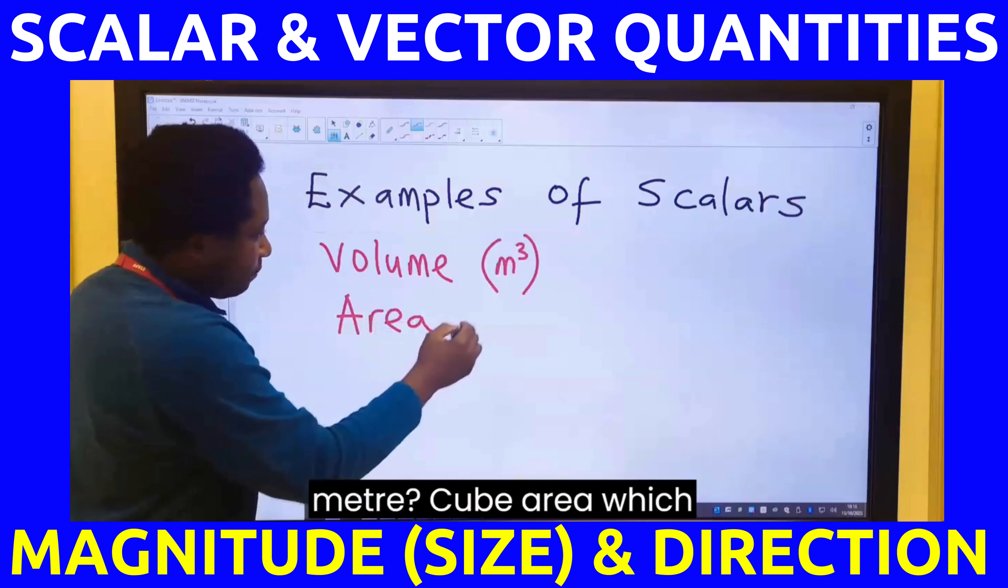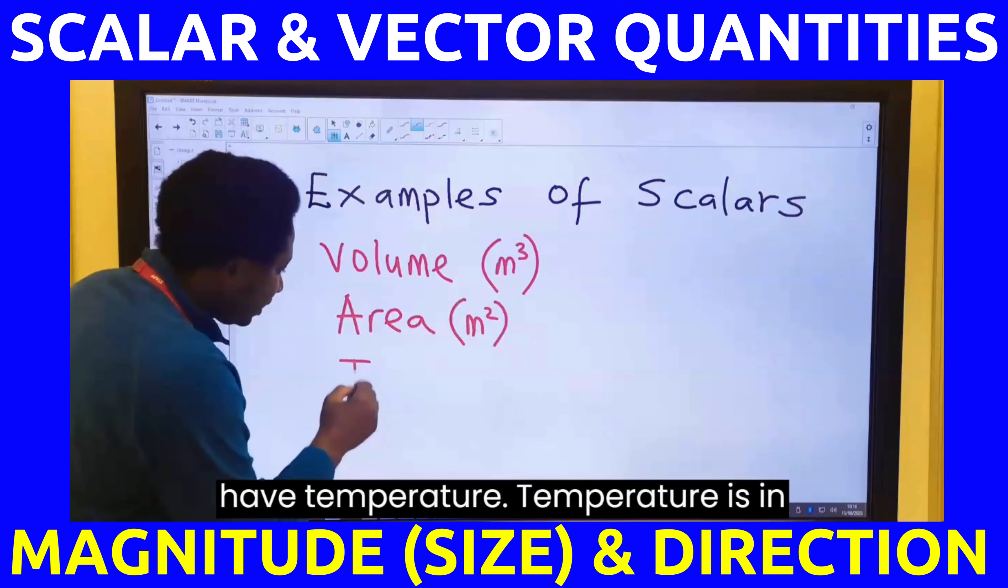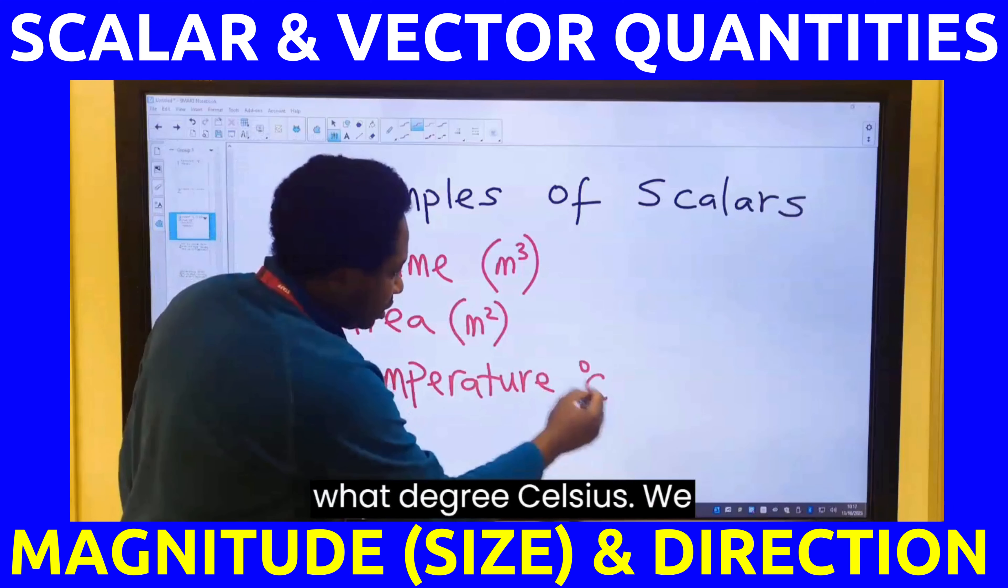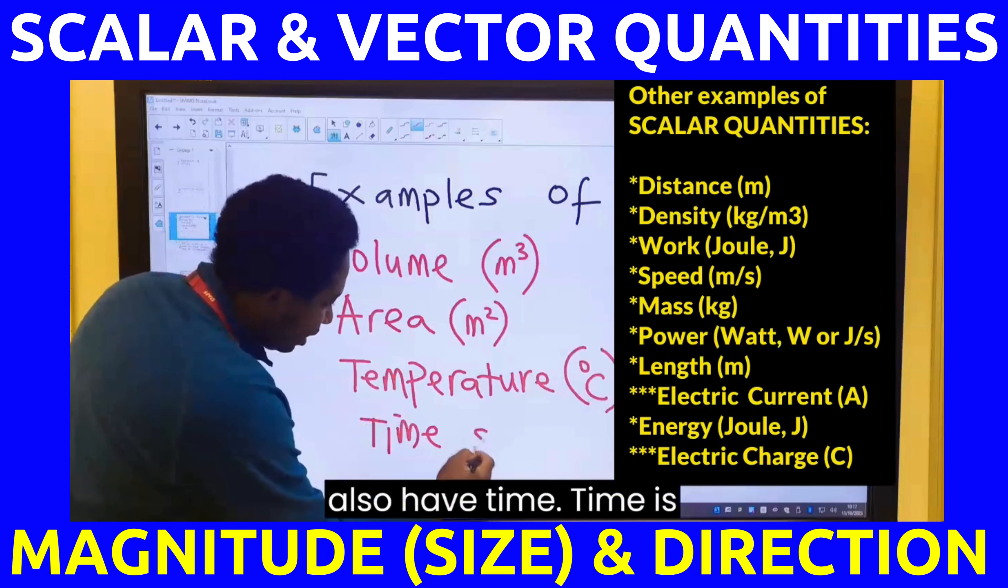Area, which is meter squared. We have temperature. Temperature is in degree Celsius. We also have time. Time is measured in seconds.